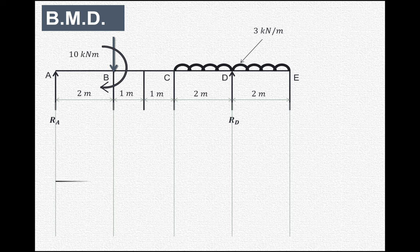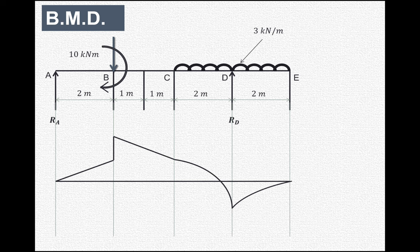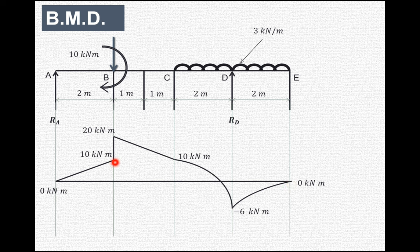Now let us draw the bending moment diagram. At A and E bending moment is 0. At B left it is 10 kNm, and adding the existing 10 kNm moment gives 20 kNm at B. At C it is 20 kNm. There is a UDL between C and D and between D and E, so the bending moment varies as a parabolic curve in those regions.